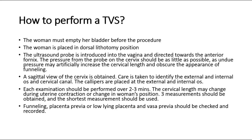The ultrasound probe is introduced into the vagina and directed towards the anterior fornix. The pressure from the probe on the cervix should be as little as possible, as undue pressure may artificially increase the cervical length and obscure funneling. A sagittal view of the cervix is obtained, with care taken to identify the external and internal OS and cervical canal, where calipers are placed.